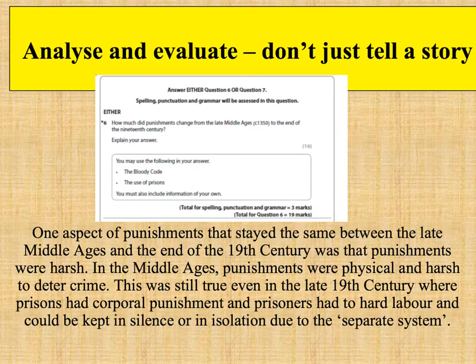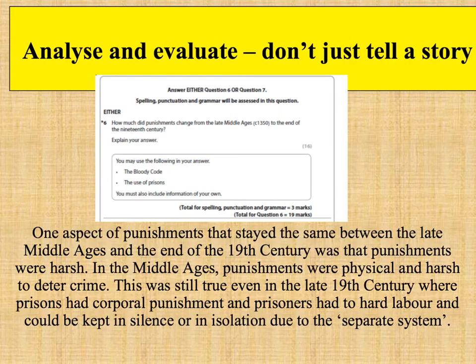An example of how to do this: once you've done the BUSY, do a quick plan. Get your paragraphing right — a paragraph on change, a paragraph on continuity, then a conclusion. Here's an example of evaluation: 'One aspect of punishments that stayed the same between the late Middle Ages and the end of the 19th century was that punishments were harsh. In the Middle Ages, punishments were physical and harsh to deter crime. This was still true even in the late 19th century, where prisons had corporal punishment and prisoners had to do hard labour.' That's what we mean by analysis and evaluation — using knowledge to construct a historical argument.